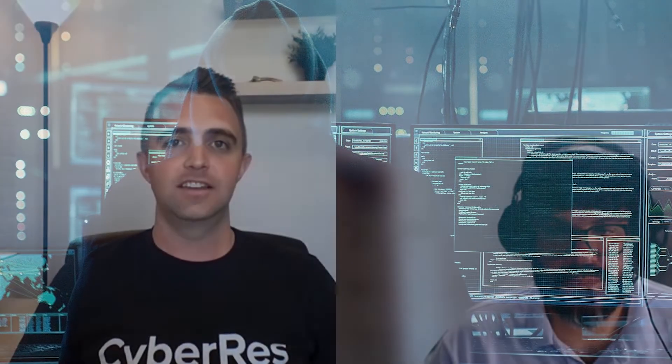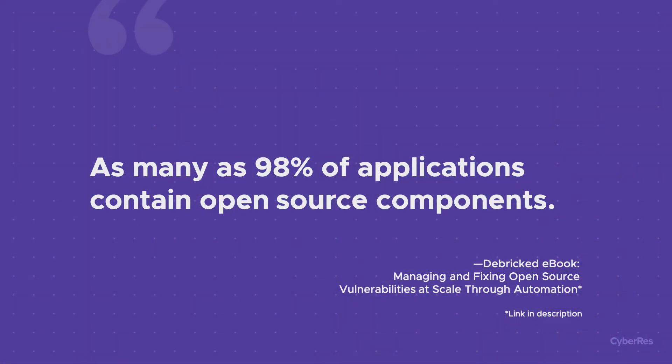I recently saw a statistic that said as many as 98 percent of applications contain open source components. What does that mean when you hear that statistic? For me, that means that in the software development world we've been reusing software a lot, which is really good. I like the idea of using collaborative source code and libraries to build our software. The main problem is when 98 percent of applications are using pieces of software, we are supposing that those libraries are all safe, secure, and investigated for security issues — and that's not always the truth.